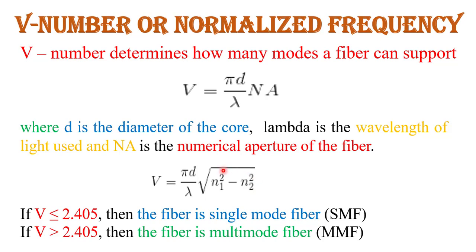Note that the standard numerical aperture formula √(n1² − n2²) applies to step index fiber; for graded index fiber, the formula discussed earlier should be used. If the value of V is less than or equal to 2.405, the fiber is a single mode fiber. If V is greater than 2.405, it is a multi-mode fiber.